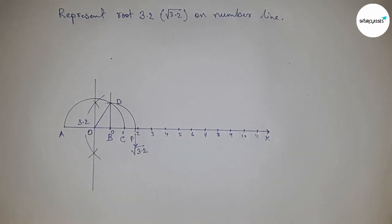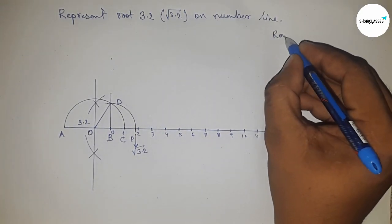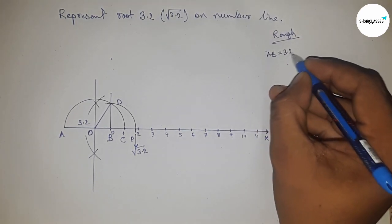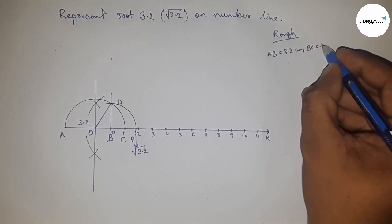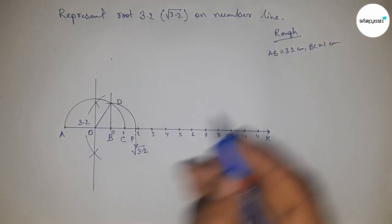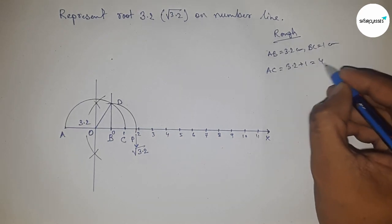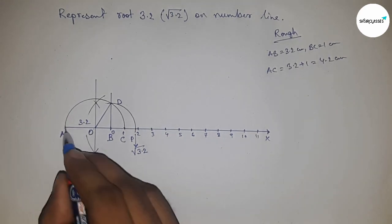Now let's verify with the back calculation of root 3.2. Given: AB equals 3.2 centimeters and BC equals 1 centimeter, so AC equals 3.2 plus 1, which is 4.2 centimeters.